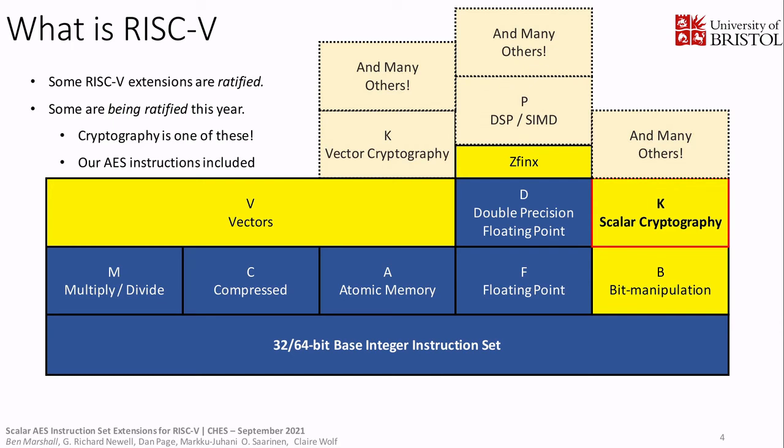This incomplete map shows this: at the bottom you've got the base instruction set and each of the little bricks represents an extension on top. The blue ones are ratified, meaning they're frozen and won't change. The bright yellow ones are currently being developed, and the slightly paler yellow ones are on the road map. Some of these extensions are being ratified this year, including the Scalar Cryptography instruction set that we have been working to extend with these AES instructions.